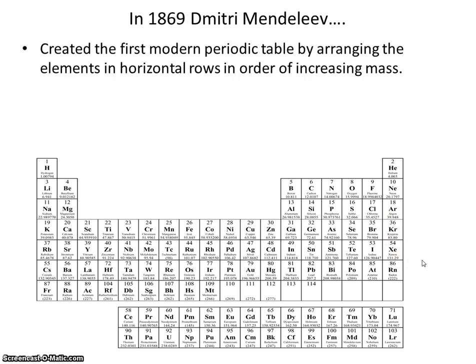So Dmitry Mendeleev created the first modern periodic table by arranging the elements in horizontal rows in order of increasing mass.